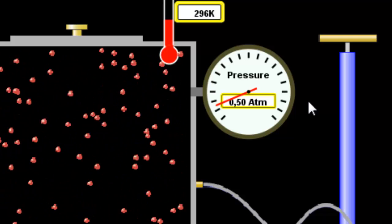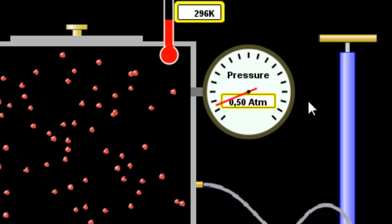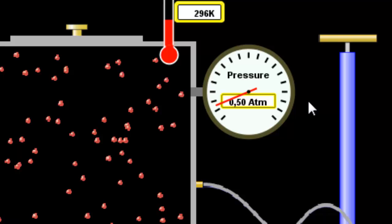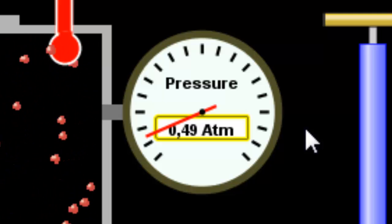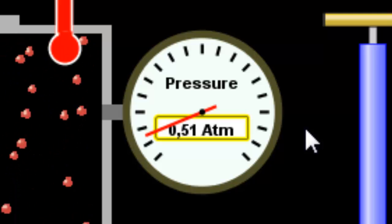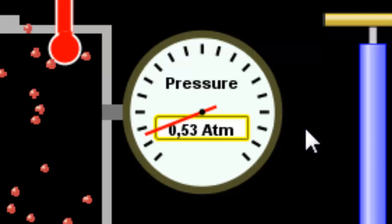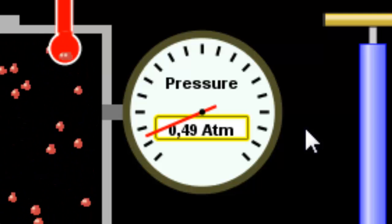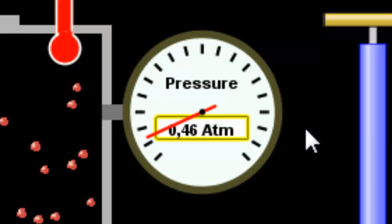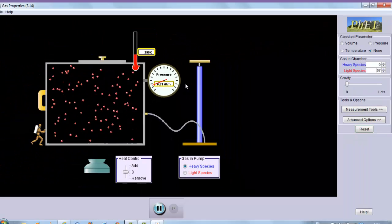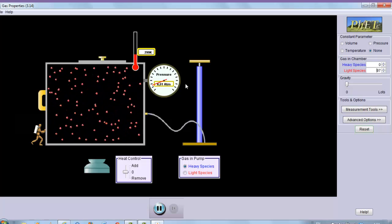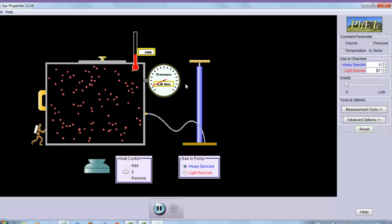If you observe the pressure gauge for a certain amount of time, let's say for a minute, you can pick out those two values, the lowest and the largest. Then you could say what the pressure is on average. As I've been watching the pressure gauge, I saw the smallest value was about 0.46 atmospheres, and the largest value I saw was 0.54 atmospheres. I will use these two values to demonstrate how to describe the pressure inside.